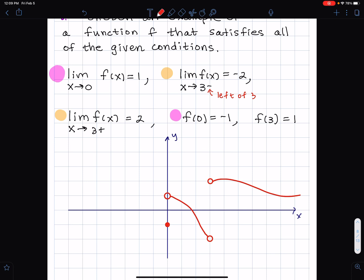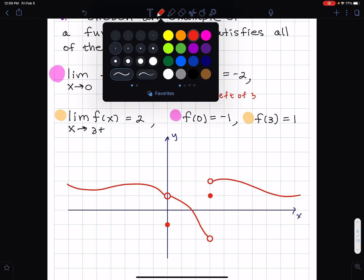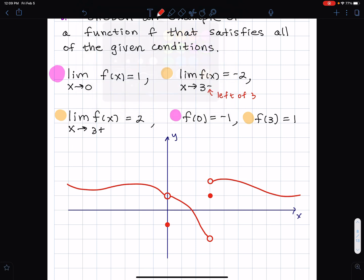It could be a squiggle, it could be a straight line, whatever you want. It's not specified. But this 3 plus means from the right of 3. So from the right of 3, the limit is positive 2.